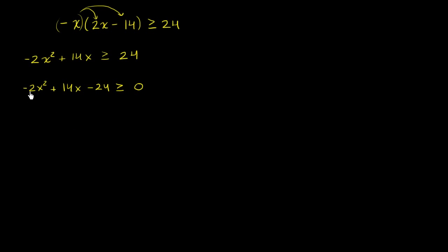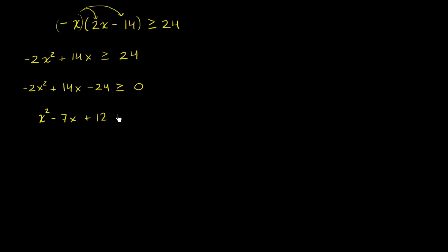I don't like having this negative 2 out front, so I want to divide both sides by negative 2. I can't divide just the left-hand side — I have to divide the right-hand side by negative 2 as well. Any time I multiply or divide both sides of an inequality by a negative number, it flips the inequality. So dividing both sides by negative 2, I get x squared minus 7x plus 12 less than or equal to 0.